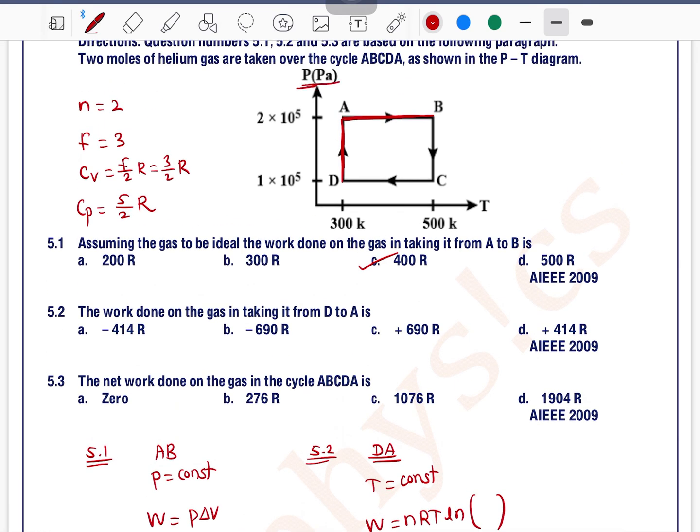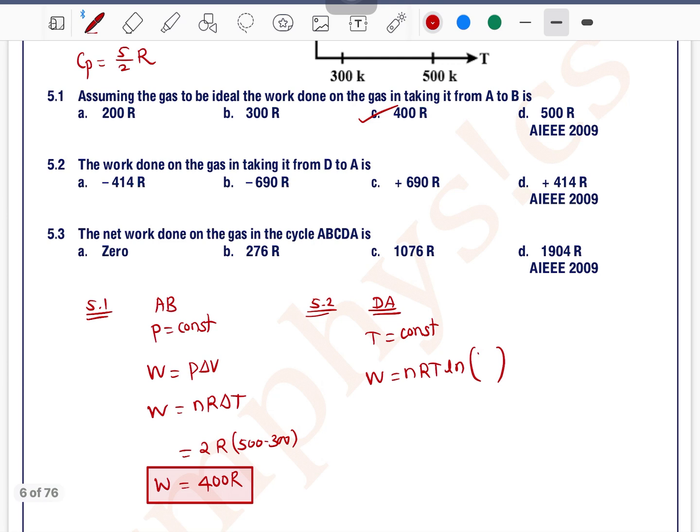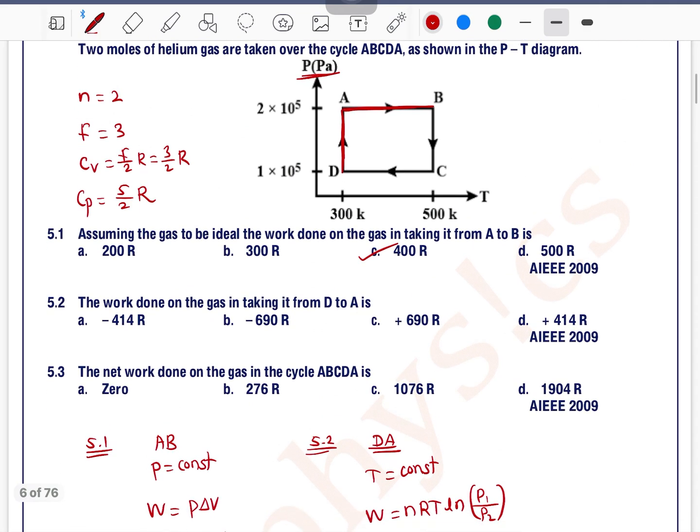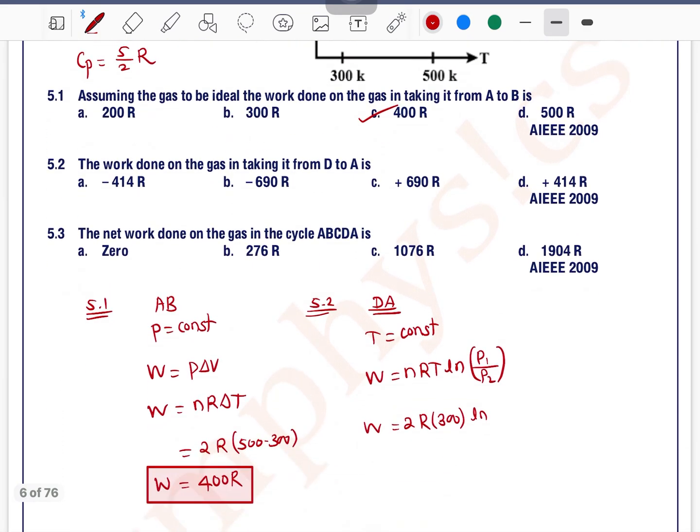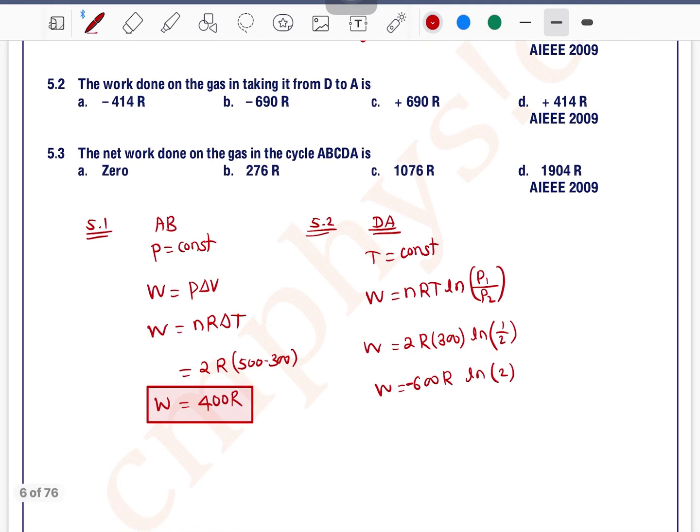The formula for work done in an isothermal process is nRT·ln(V₂/V₁). But on the x-axis it is pressure, so we can write this as P₁/P₂. So work equals 2R×T, where T is 300 Kelvin, times ln of P₁/P₂. P₁ is 1, P₂ is 2, so this is 1/2. You can write it as 600R·ln(2)